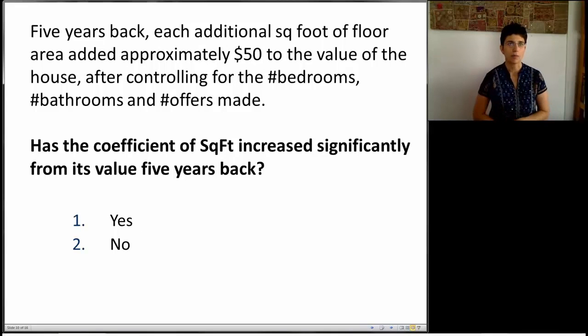Okay, let's take another step. Let's say that we're trying to compare these data that we acquired today to the story five years back. And we're asking, are the prices actually changing over time? So here's the story. Five years back, each additional square footage of floor area added approximately $50 to the value of the house, after controlling for the specs such as bedrooms, bathrooms, and offers. The question is, our current square footage coefficient is 52 point something. Does this indicate a significant increase from the $50 that was the average five years ago? And we can treat that $50 as, let's say, a population parameter. How do we answer this question?